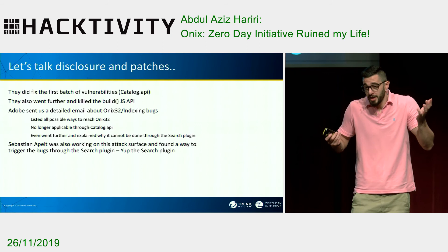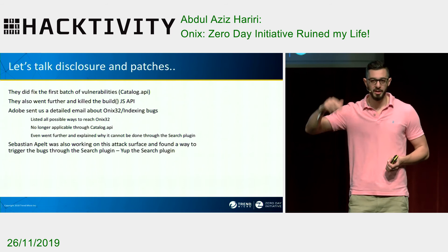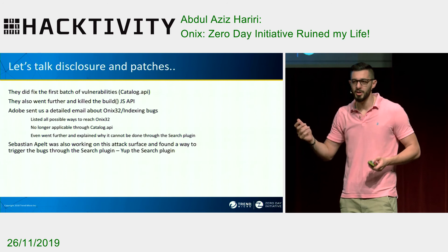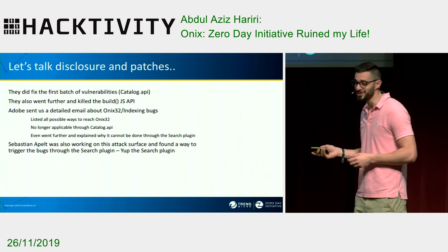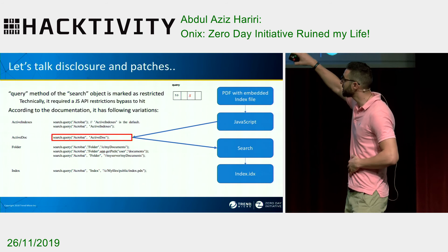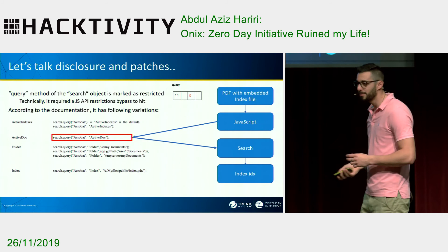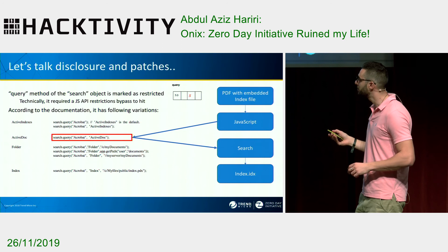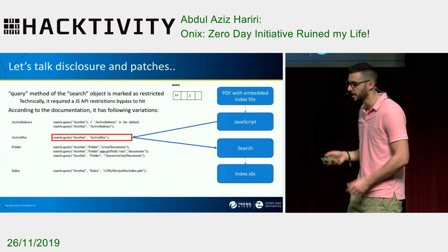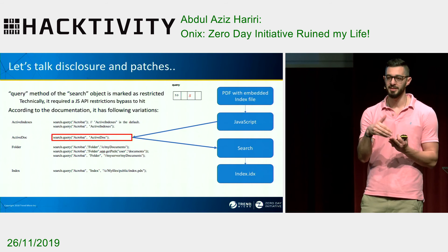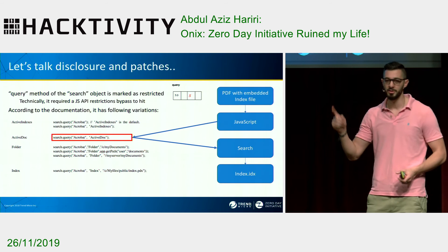In their email they documented everything: Catalog — you can't do it. Search API — you can't do it. But I hadn't been looking at the Search API — it turns out someone else was. Funny enough, they documented every single case where you can hit the parsing code through query, but they actually forgot — or didn't know — that you can trigger the parsing code even from a non-privileged context if you add an active doc. An active doc means if you have that index file embedded inside the PDF and run a search with Acrobat active doc, you can definitely trigger the whole code again.